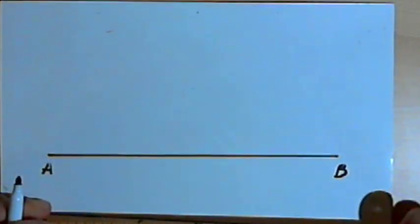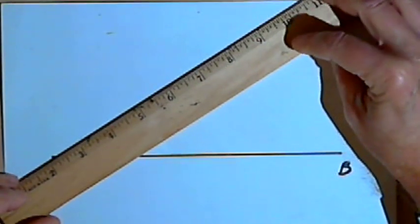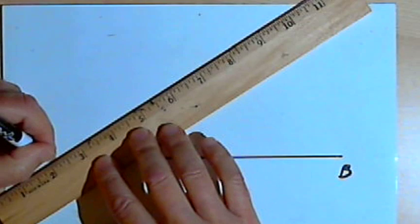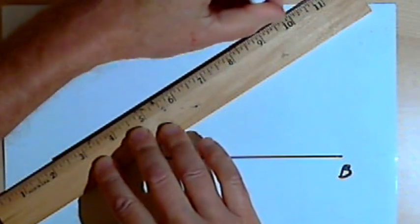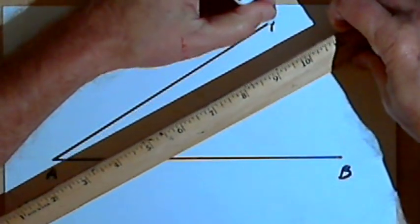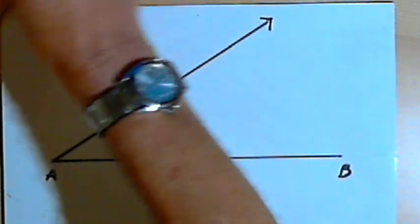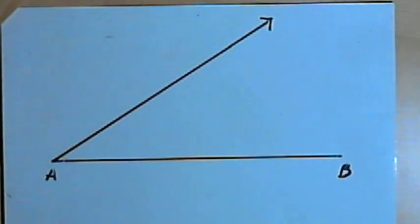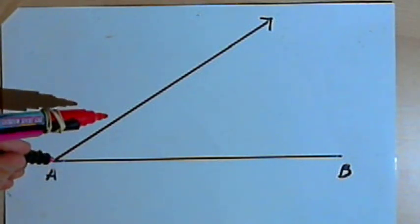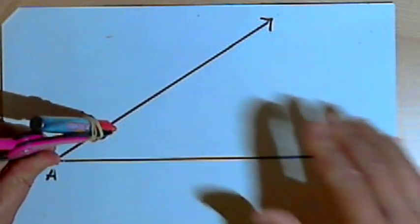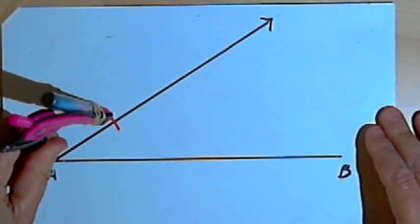And then I'll draw a ray from point A. And again, the ray can be at any angle you want. Now I'm going to use a compass and I'm going to mark off equal segments, three equal segments, along that ray. So I'll place the point of my compass at A and draw an arc on the ray.